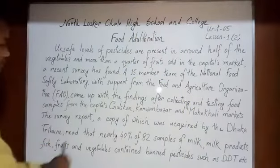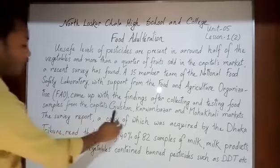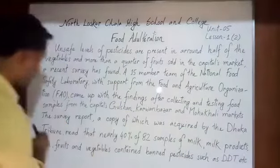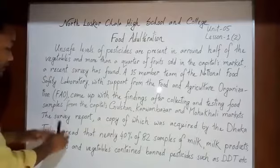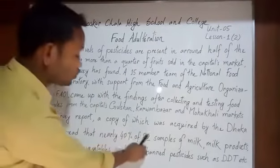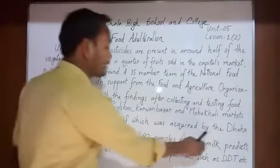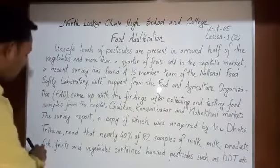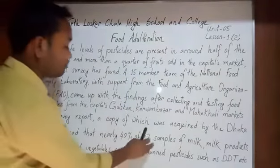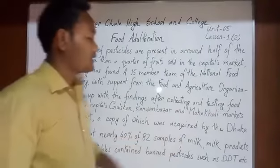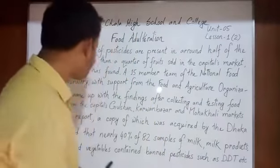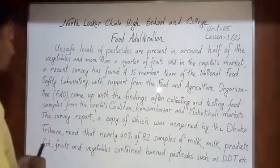The survey report, a copy of which was acquired by the Dhaka Tribune, found that nearly 40 percent of 82 samples of milk, milk products, fish, fruits, and vegetables contained banned pesticides such as DDT, aldrin, and so on.